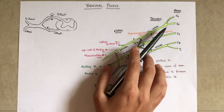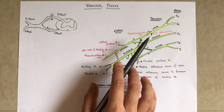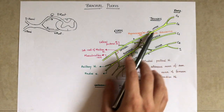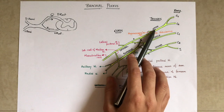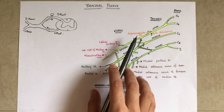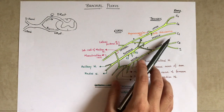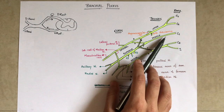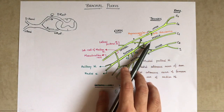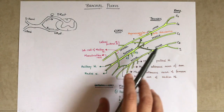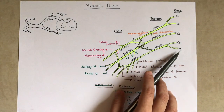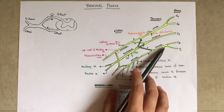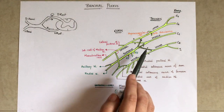The ventral primary rami of C5 and C6 spinal nerves join to form the upper trunk. The ventral primary rami of C7 continues as the middle trunk. The ventral primary rami of C8 and T1 spinal nerves join and form the lower trunk.